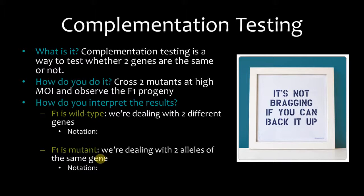Or are they different genes? Well, we can do that using complementation testing. So how do you do it? You cross two mutants at a high MOI and observe the F1 progeny. You should definitely remember this.